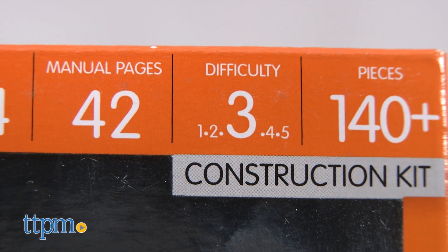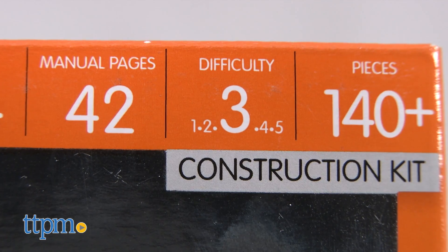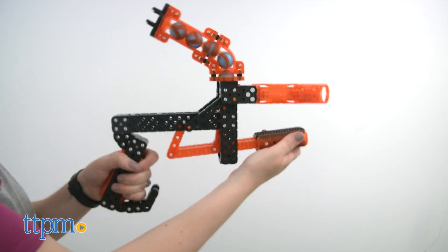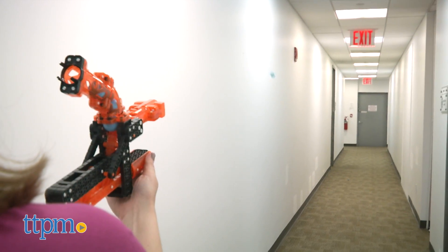This construction kit has a difficulty ranking of 3 out of 5, so it's a medium difficulty build. It took us 20 minutes to build, and the instructions were easy to follow.